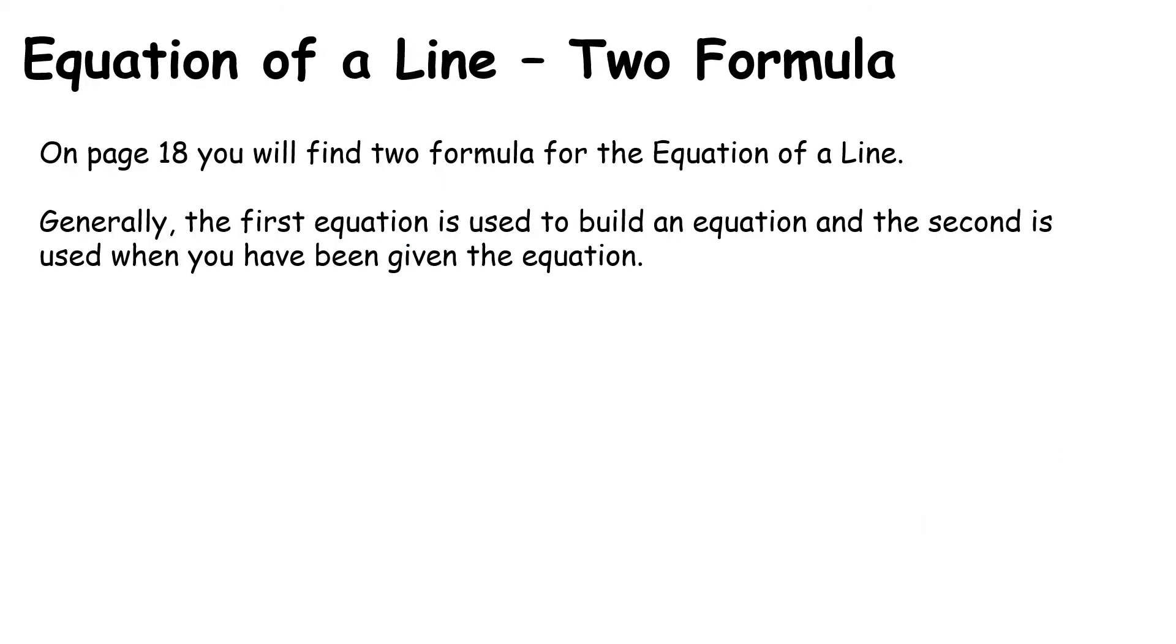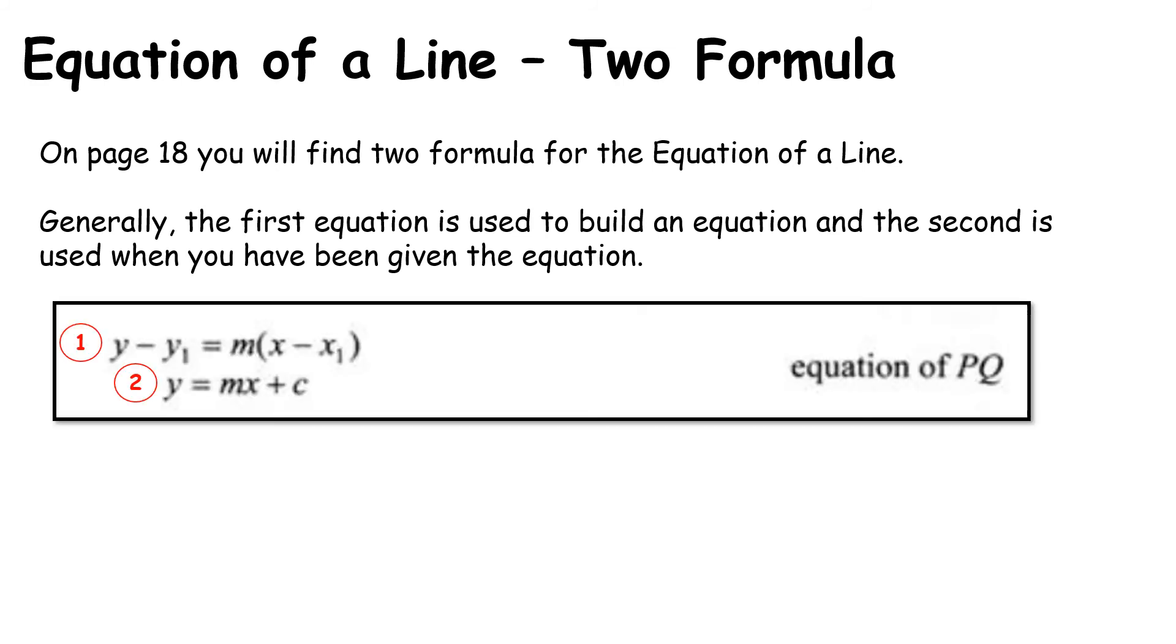So now we're going to talk about the equation of the line. So when you're looking at page 18 you're going to see that there are two equations. So the general rule of thumb here is that the first equation there is for building the equation. The second one is for when you're given the equation. Now that is not a 100% rule but it is a very good rule of thumb to have. It will get us through the majority of questions. But in general that first one that I've labelled 1 here, that is to build an equation. So if somebody asks you to get the equation that's what we're going to use. And if we are given the equation of the line, the second one is what we're going to use instead.